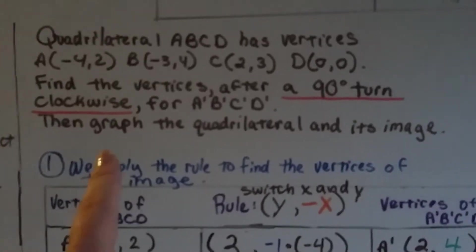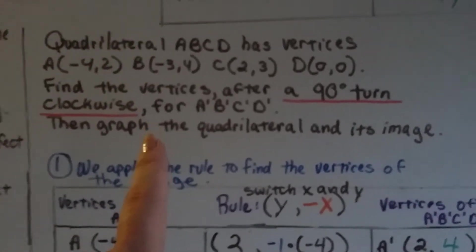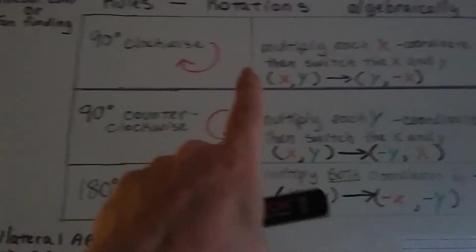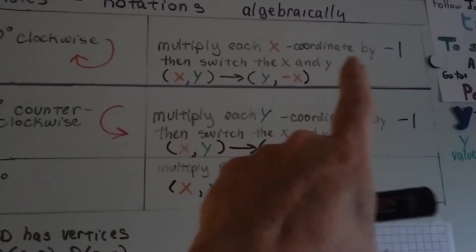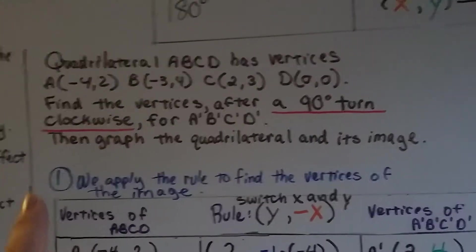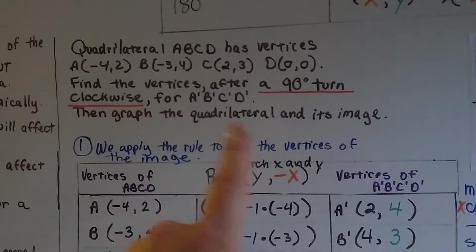We need to find the vertices after a 90 degree turn clockwise for A prime, B prime, C prime, D prime. So that means we're going to multiply each x-coordinate by negative 1 and then switch the x and y values. Then we need to graph this quadrilateral and its image.